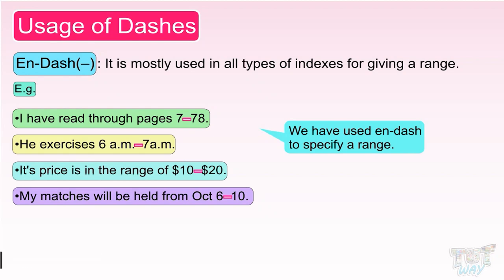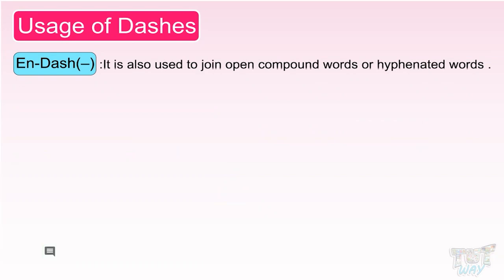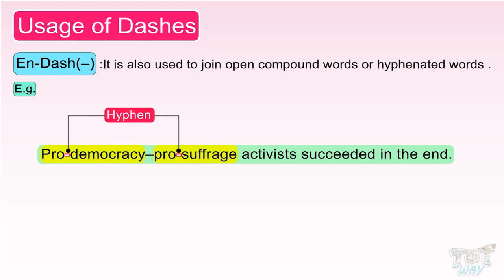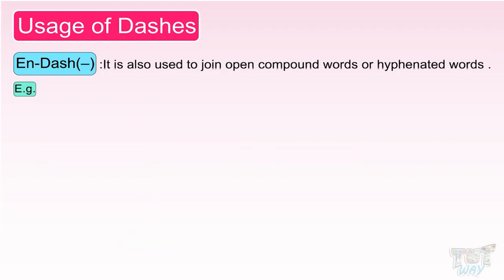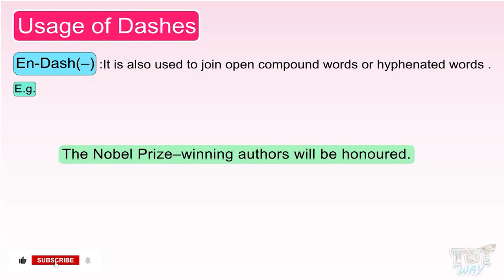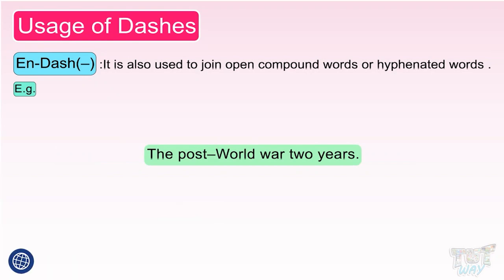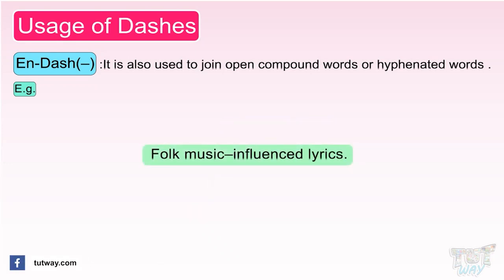N dash is also used to join open compound words or hyphenated words. For example: 'Pro-democracy, pro-suffrage activists succeed in the end.' Here pro-suffrage and pro-democracy are glued together with the help of hyphen, and these two hyphenated words are joined together with the help of N dash. 'The Nobel Prize–winning authors will be honored.' Here we have joined a compound word, Nobel Prize, and the word winning with the help of N dash. 'The post–World War Two years.' Here again, we have joined the word post with a compound word using N dash. 'Folk music–influenced lyrics.' Here again, we have joined two compound words with the help of N dash.